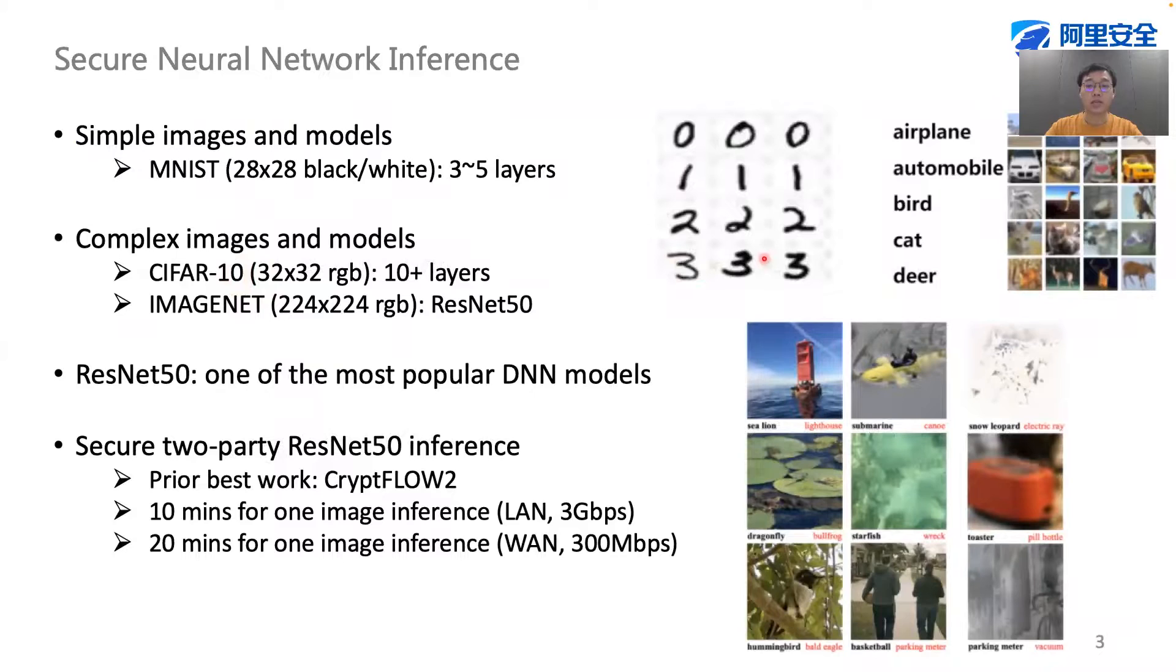The task that we intend to solve throughout the whole talk is secure neural network inference. A three-layer neural network might be sufficient to classify the MNIST dataset, but for complex images like ImageNet, a complex model is needed, such as a ResNet model with 50 layers.